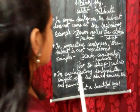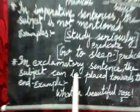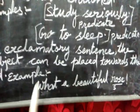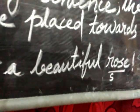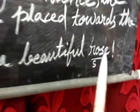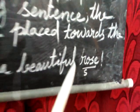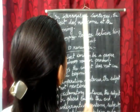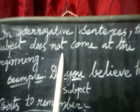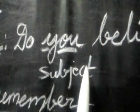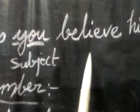In exclamatory sentences, the subject can be placed towards the end. For example: 'What a beautiful rose!' Rose is the subject, which is placed at the end of the sentence. In interrogative sentences, the subject does not come at the beginning. For example: 'Do you believe him?' This is an interrogative sentence and 'you' is the subject, which is placed between the helping verb and the main verb.